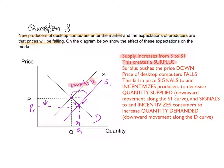So this creates a surplus. Extend the line from the original equilibrium price P. The surplus does the opposite of a shortage — it will actually exert a downward pressure on the price, pushing the price down. Therefore, the price of desktop computers will slowly fall. This gradual fall in price is what brings the market back to equilibrium.